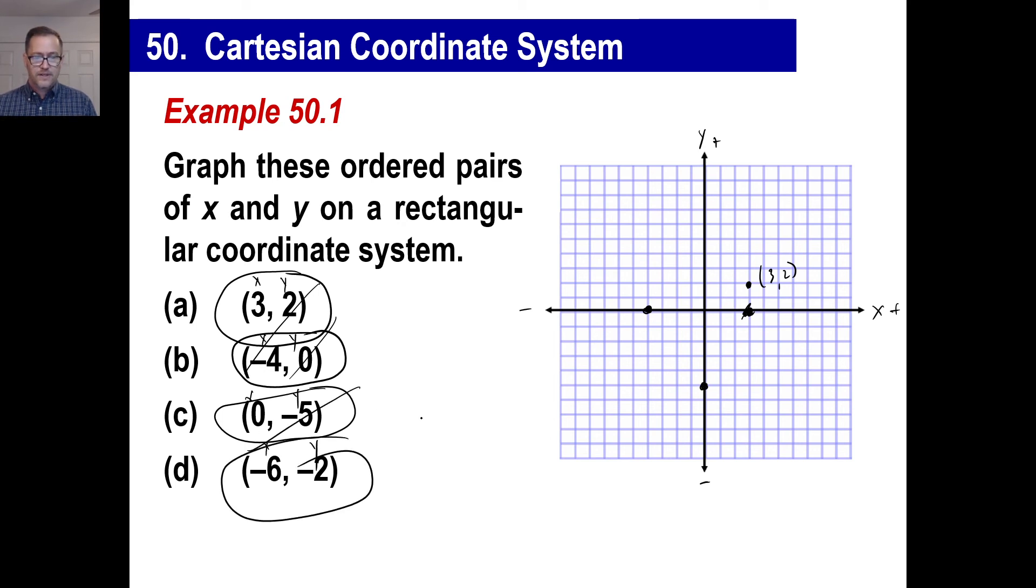Now last one, negative six and negative two. Well, that means the X, you're going to go negative six, which was going to be one, two, three, four, five, six, and going negative on the Y axis is down two. And there is your last point. That's just the basics on how to graph points. You might be very familiar with that. You can skip over that. That's fine.